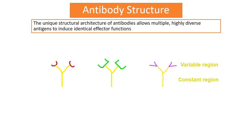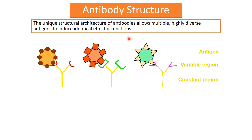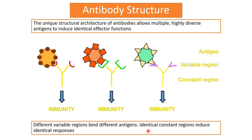This slide shows the unique structural architecture of antibodies that allows multiple highly diverse antigens to induce identical effector functions. The variable region is where the antigen attaches — different antigens adhere to the variable region by a lock-and-key mechanism. But the constant portion evokes identical effector responses, meaning different antigens attach to the variable region while the biological functions carried out by the constant region, which confer immunity, remain the same.